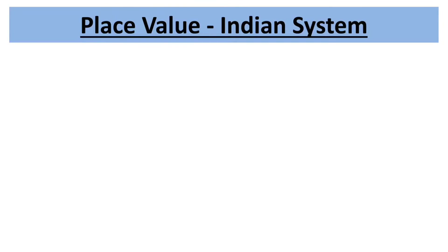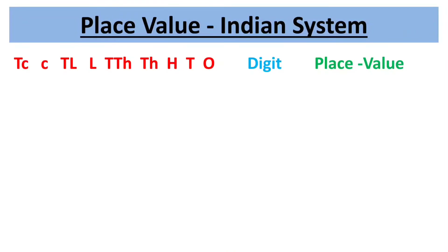We use the Indian place value chart to read and write numbers as per the Indian number system. Every digit in a number has its own value depending on its position in the chart. The nine places are grouped into four periods: ones, thousands, lakhs, and crores. All periods are separated by a comma while writing the number. Starting from the right, the first period is ones, consisting of three place values: ones, tens, and hundreds.